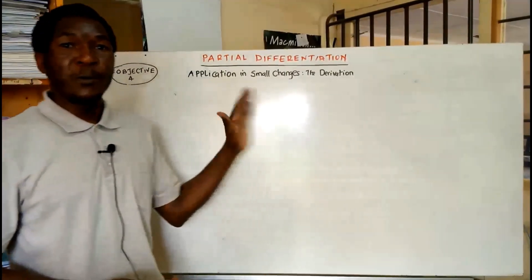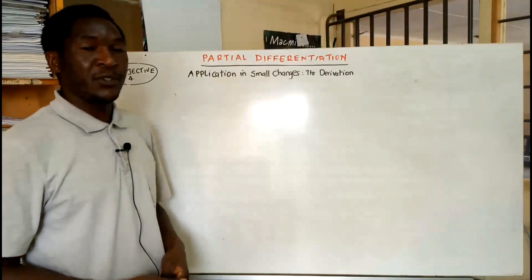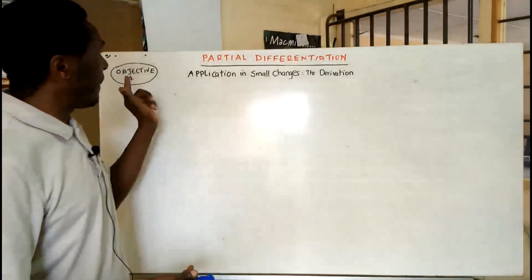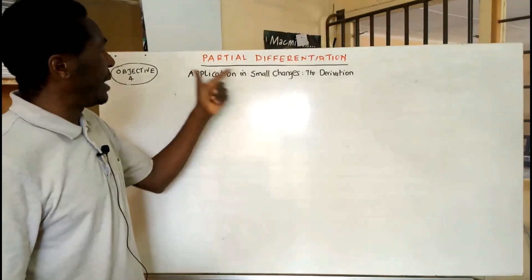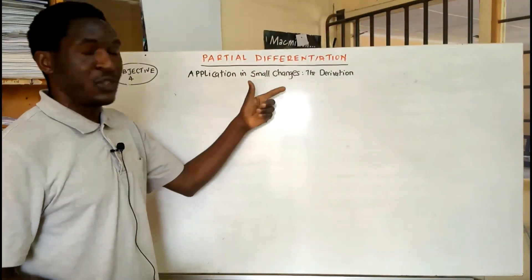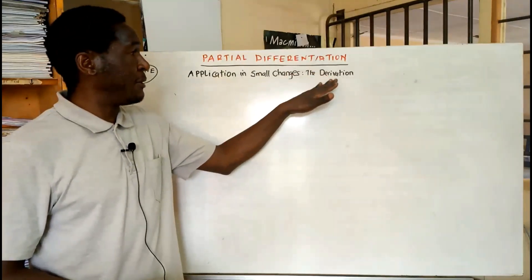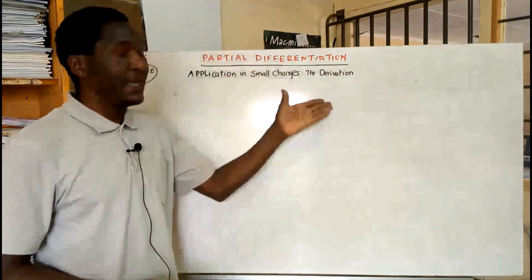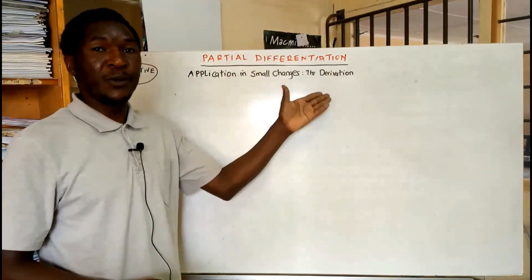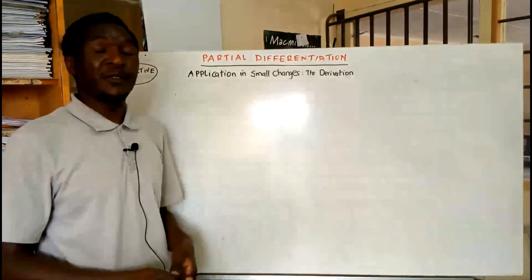We are going to look at objective four of partial differentiation, and that is the application of partial differentiation in small changes. We want to spend some time in this lesson doing the derivation of a formula that is going to be used for generalization purposes.